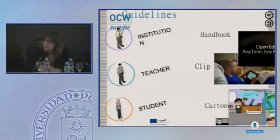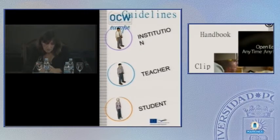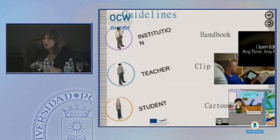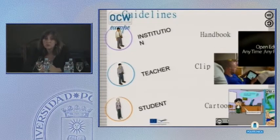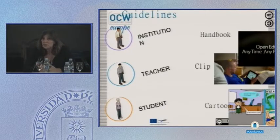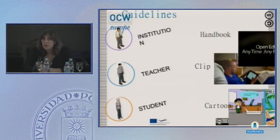Our three targets are institutions, teachers, and students. The outcomes we are working on include books for institutions, and for teachers and students — given the new generation's affinity with visual content — we also imagined new outcomes like video clips and cartoons.